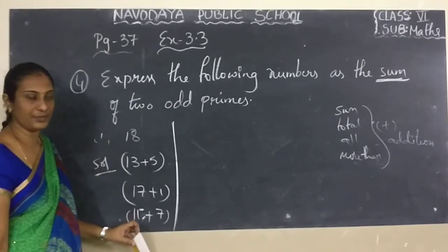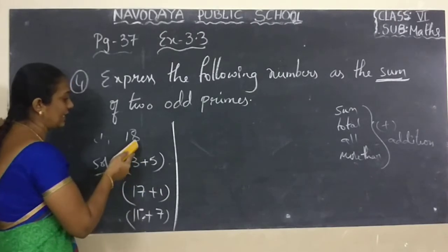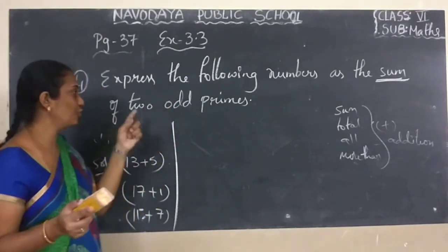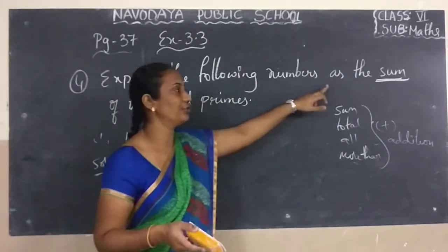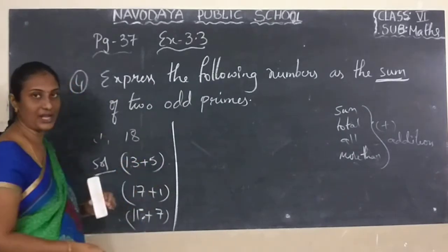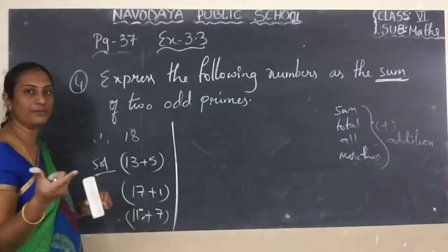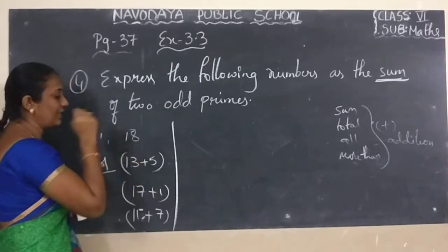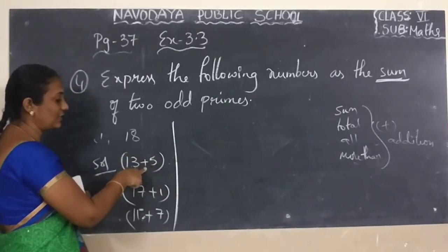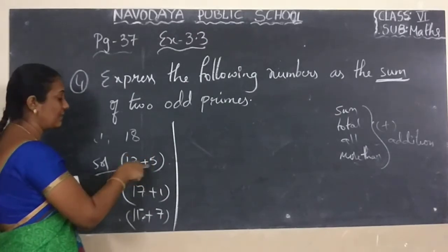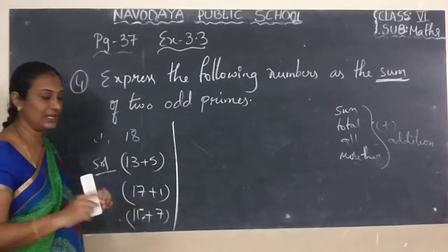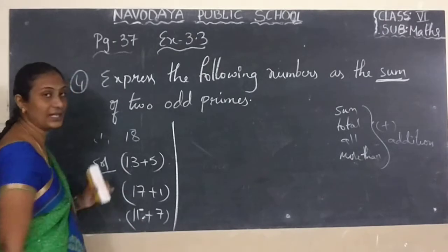You have to write some more examples, children. Once again, I am saying: 18 — we have to express as two odd primes, and those two odd primes we have to add. 13 is a prime number, 5 is a prime number. When you add the two numbers we have to get 18. So 13 plus 5 equals 18. Same process: 17 plus 1 equals 18, and 11 plus 7 equals 18.